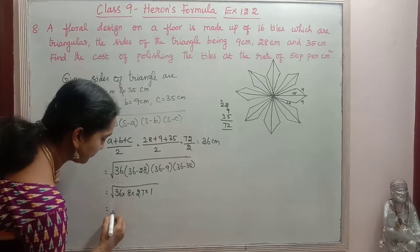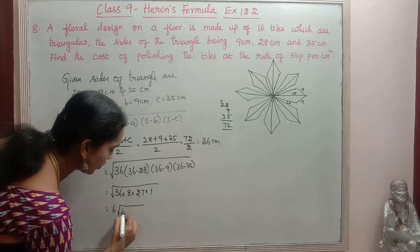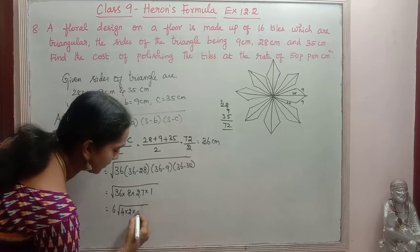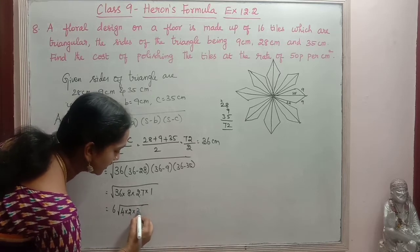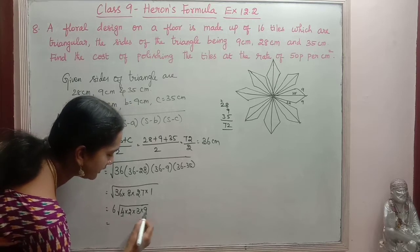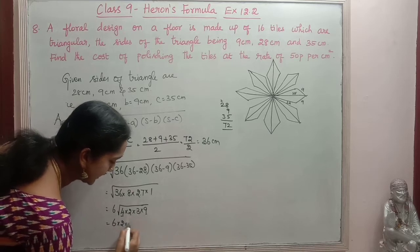Root 36 is 6. So we will take that out. So balance will be 4 into 2. 4 2's are 8. Then this one is also 27 also. 3 into 9. 3 9's are 27. So now we can take this 4 and 9 outside. Root 4 is 2 and root 9 is 3.